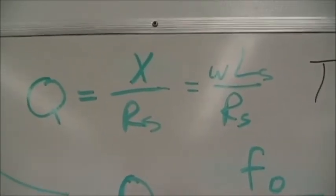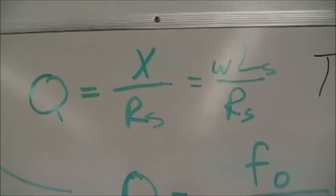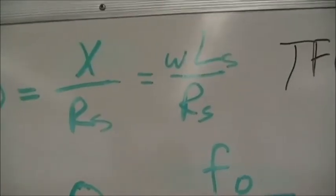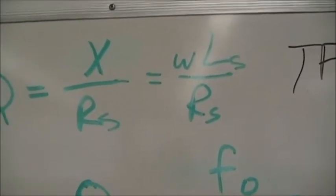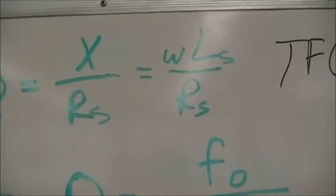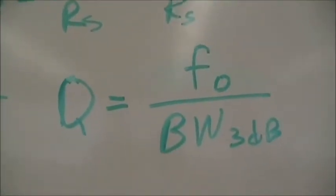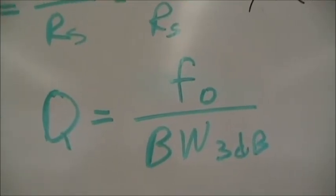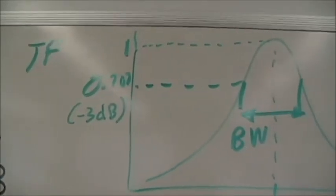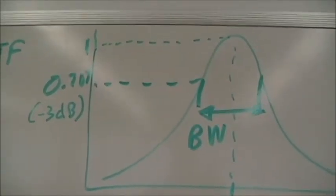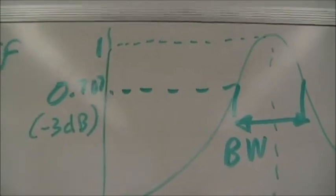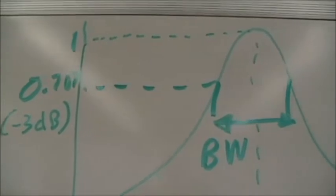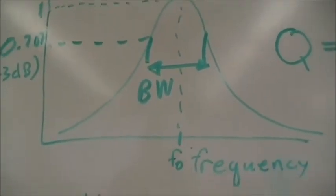Now the Q factor is related to the energy storage over the energy lost, or the X over Rs value for the series resonant circuit. Of course, the X can either be the capacitive reactance or the inductive reactance, but generally for series circuits we use X value for the inductor. So ωLs over Rs, the R for the series circuits. Now the Q can also be measured by doing the frequency of resonance over the bandwidth, 3 dB. So the bandwidth is associated with the 3 dB point, where the voltage will be 0.707. 20 log of 0.707 is minus 3 dB. So we have the bandwidth and the resonant frequency.